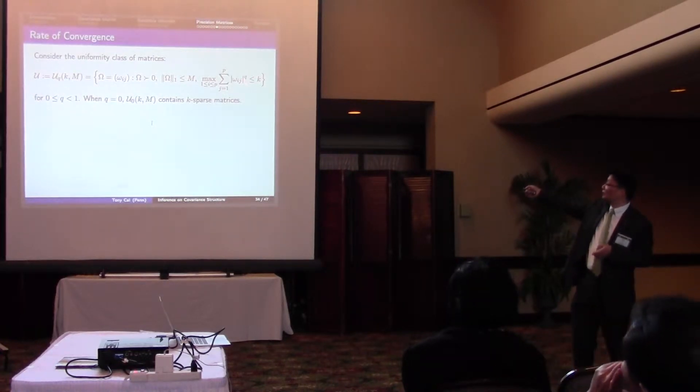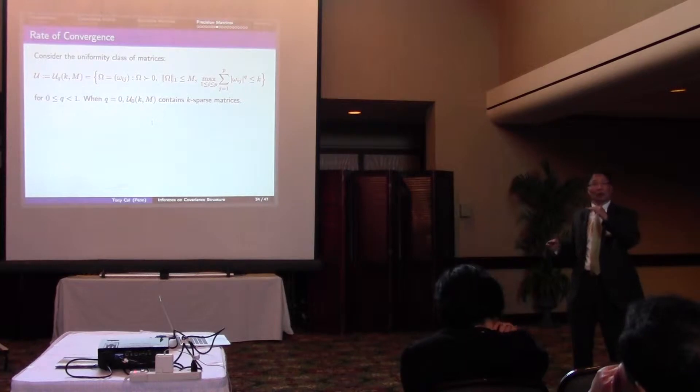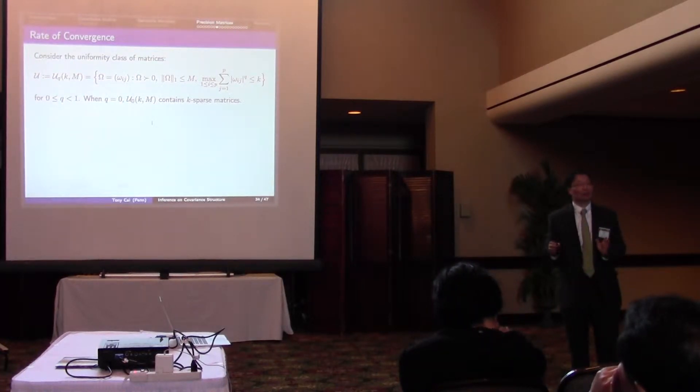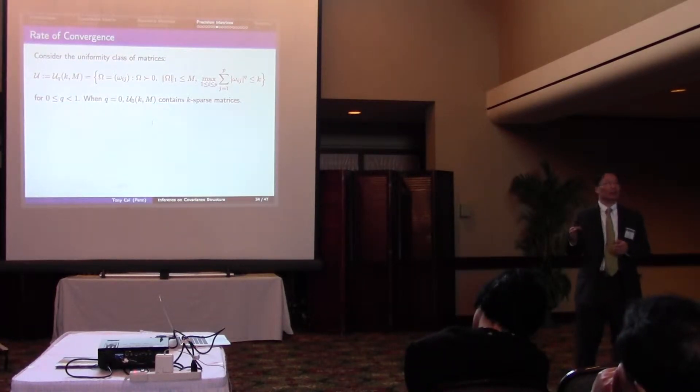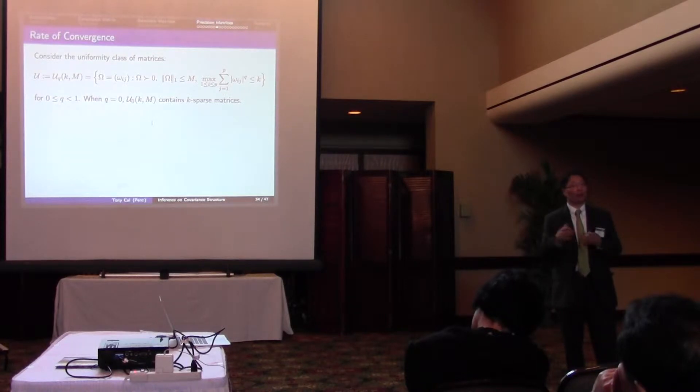you can take q to be zero so that every row and every column of the matrix has at most K non-zero elements. Otherwise, if you use this q, it can relax that exact sparsity to approximate sparsity.